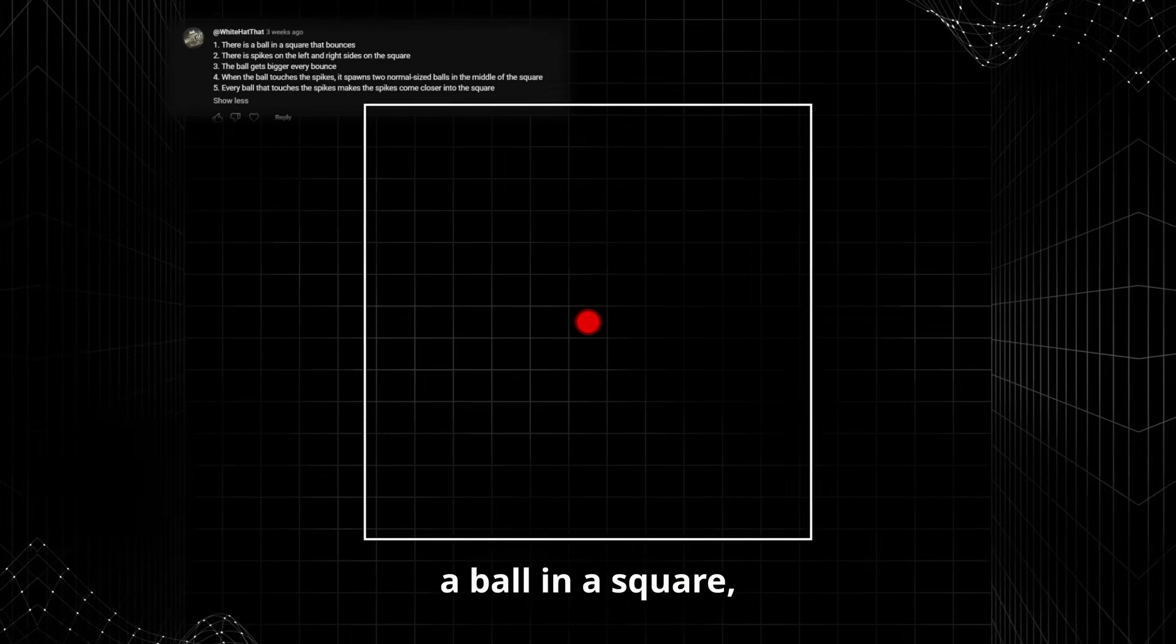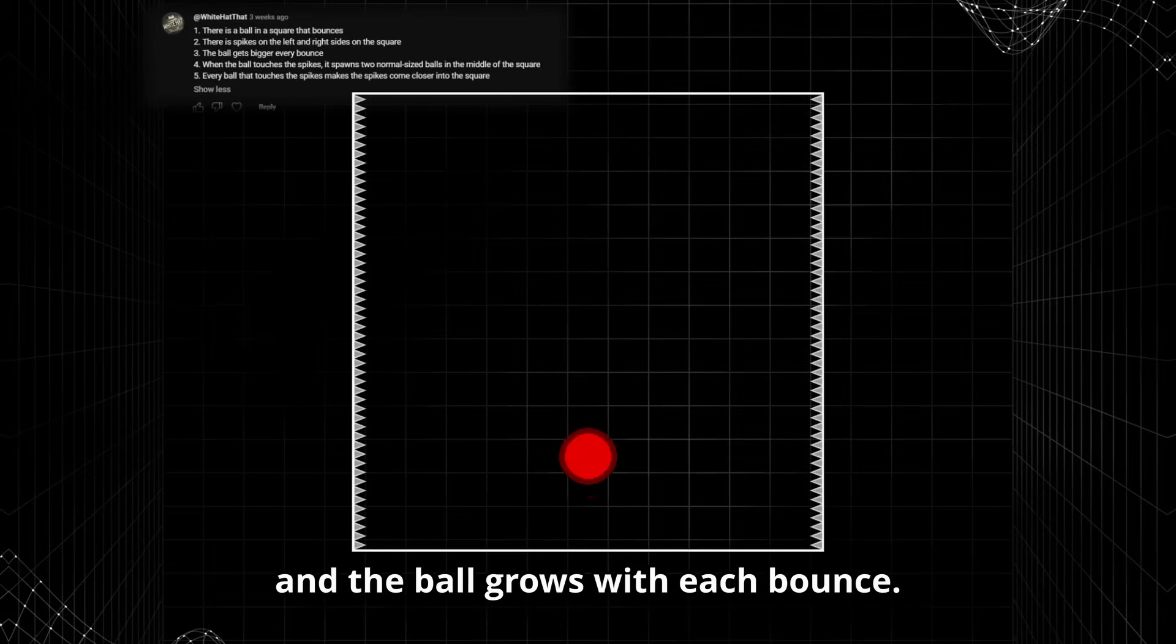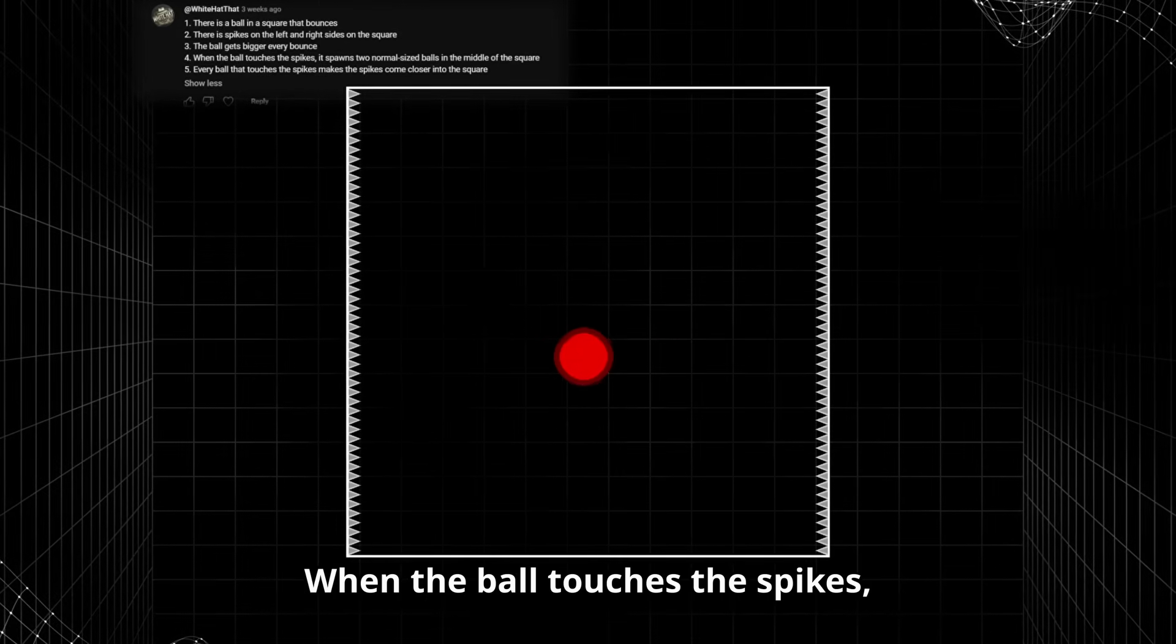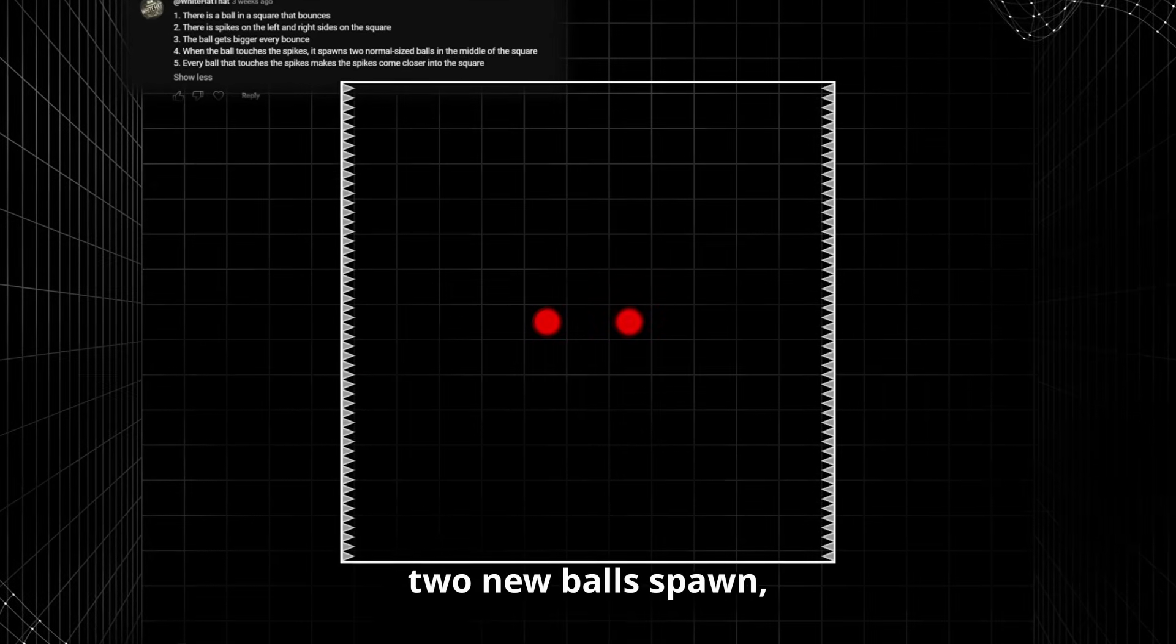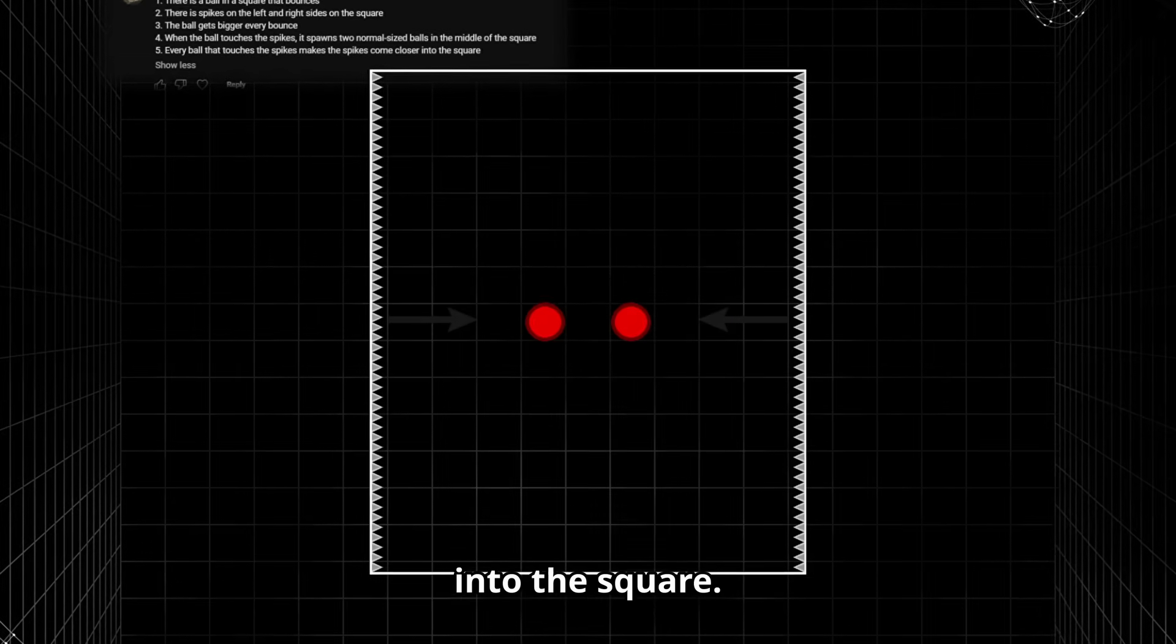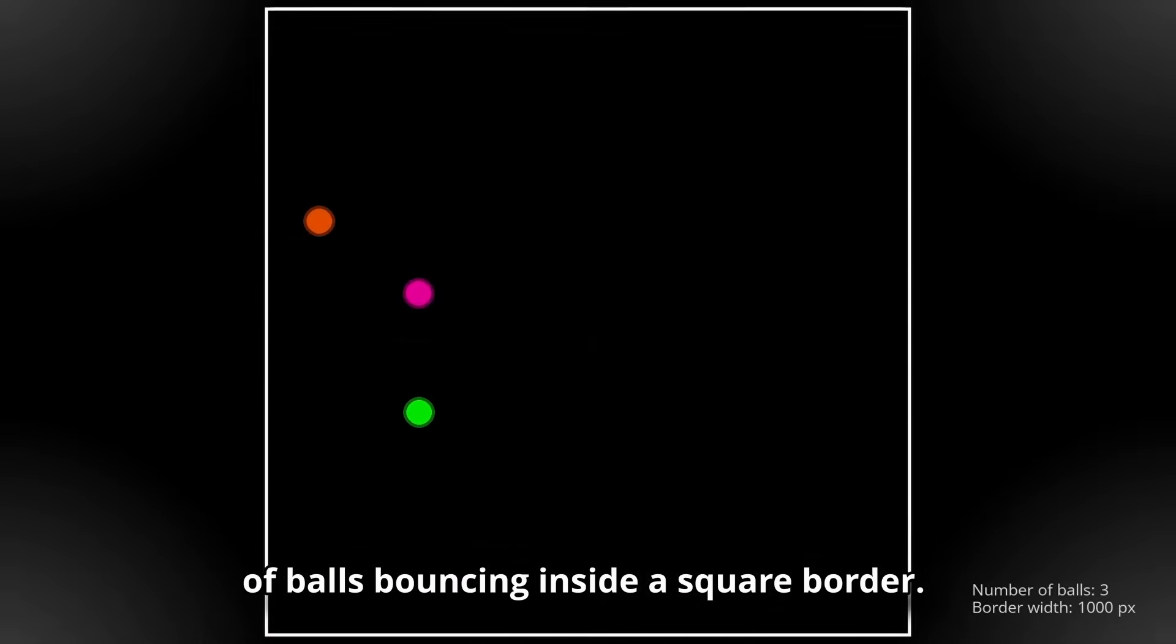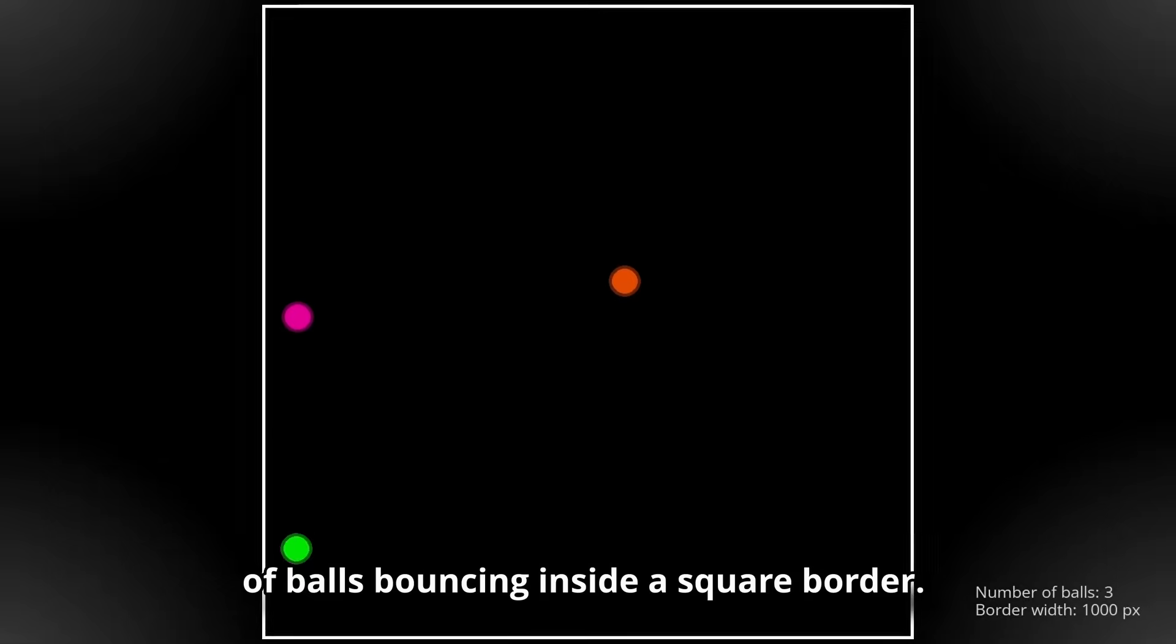A ball in a square, spikes on the left and right sides and the ball grows with each bounce. When the ball touches the spikes, 2 new balls spawn and the spikes move slightly closer into the square. I started off by programming a simple simulation of balls bouncing inside the square border.